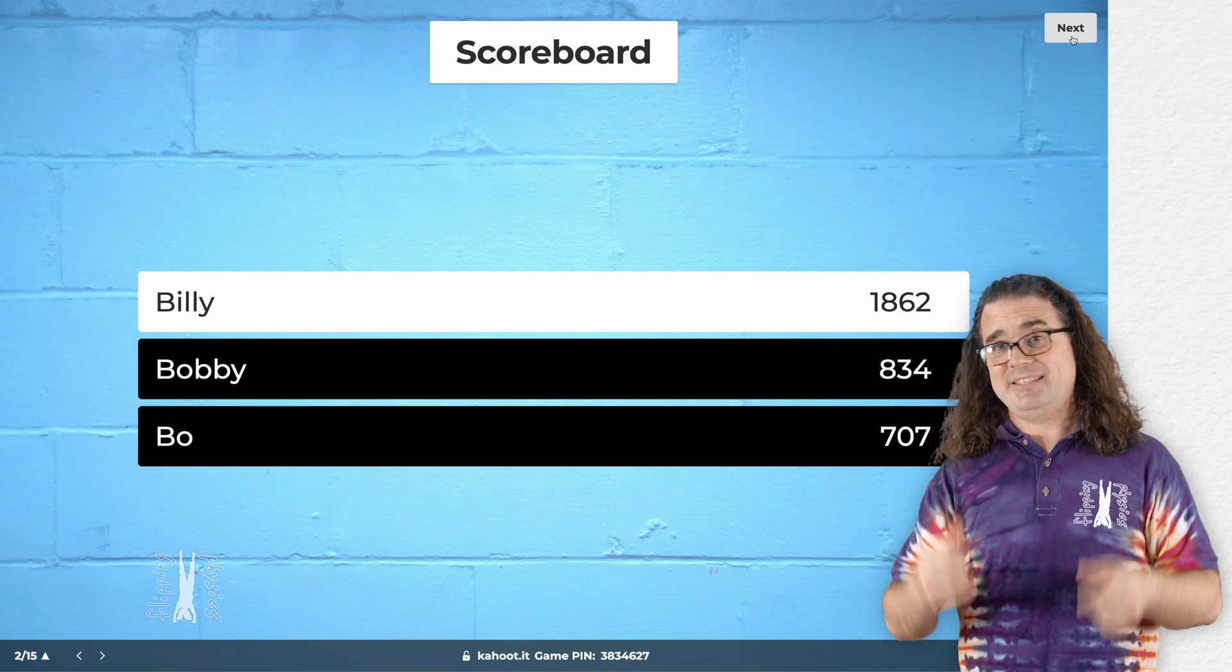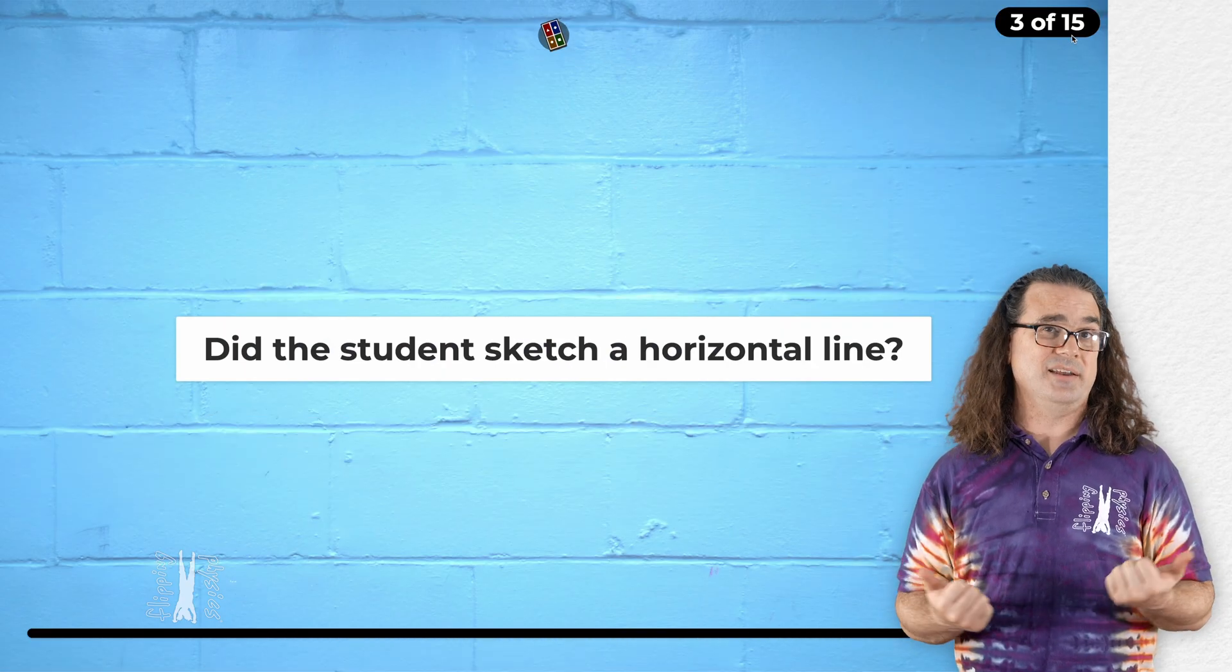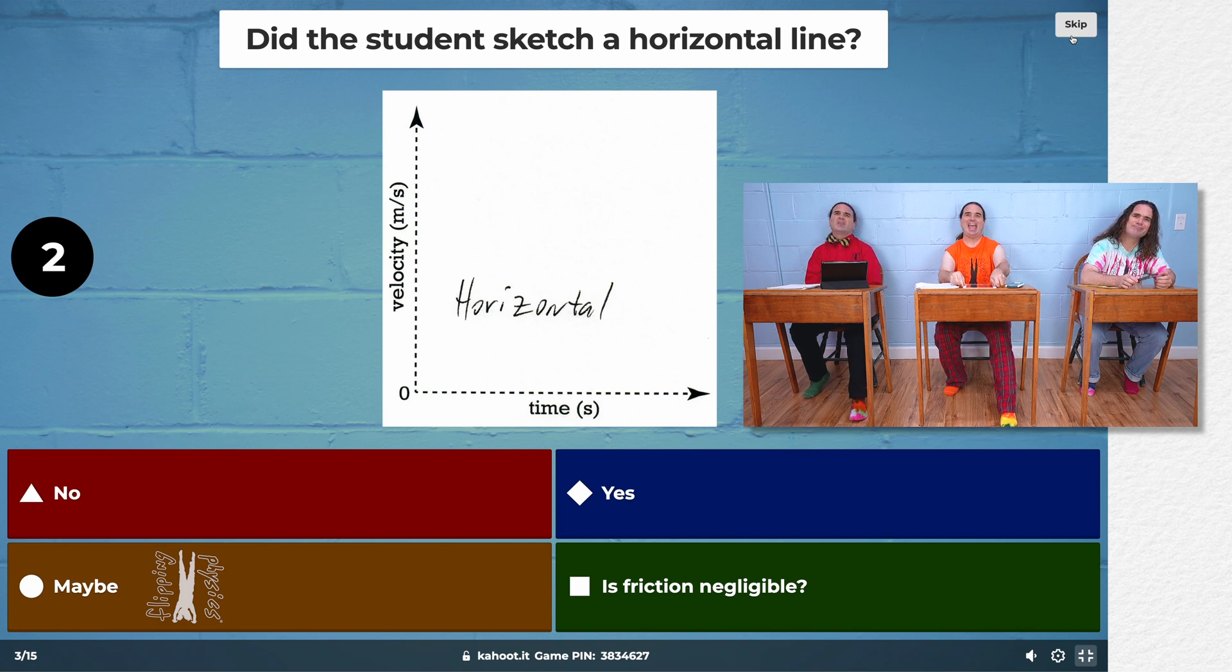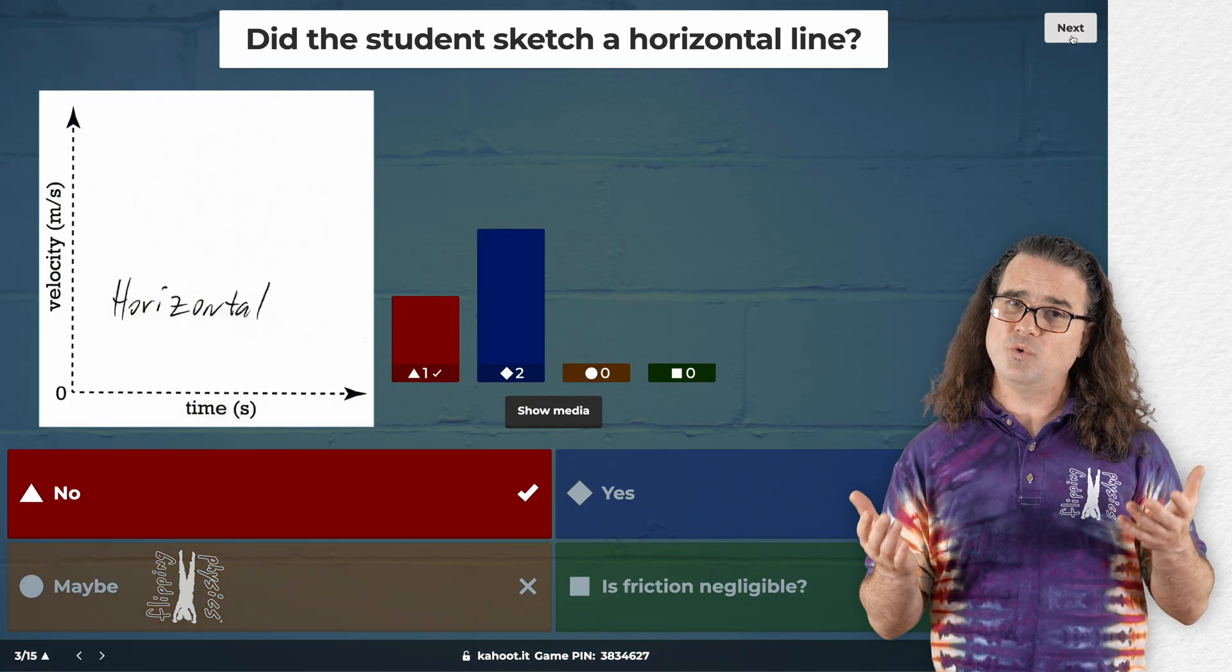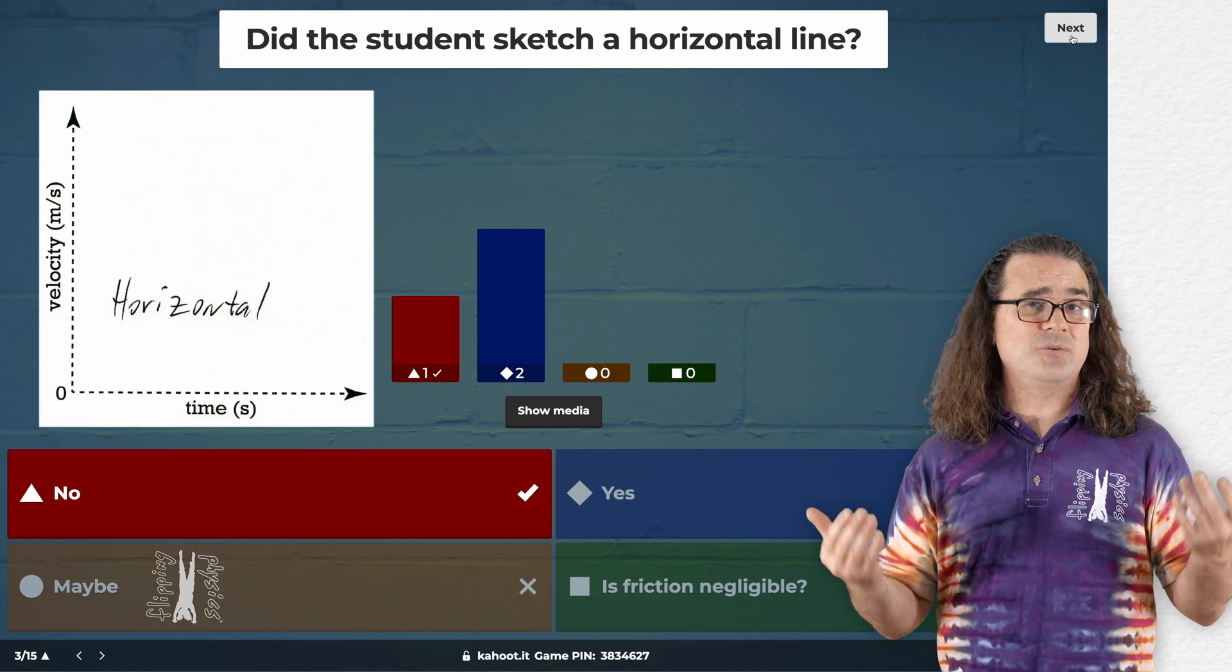Sure. And Billy is still in the lead. The next question, again, did the student sketch a horizontal line? Yes. Well done, Bobby. You are correct. But the student wrote horizontal, right? So they indicated it would be a horizontal line. Yeah. How is that wrong? But did they sketch a horizontal line? Oh. Exactly.